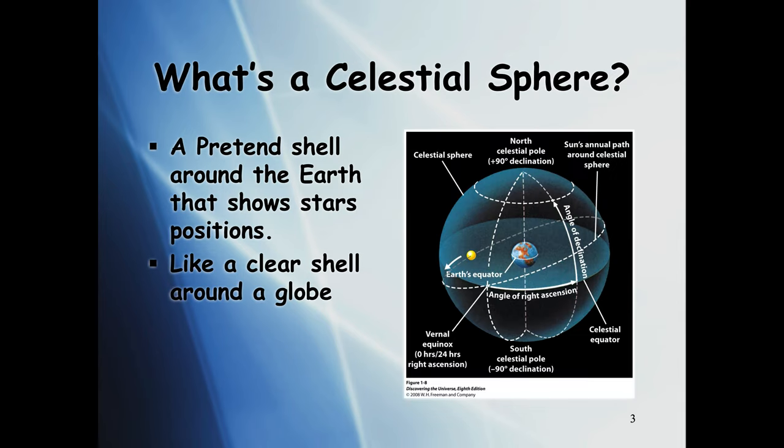So the term celestial sphere, you've heard it, I've used it, but we're going to look at it in more detail today. Basically what the celestial sphere is, is it's a pretend shell around the Earth that you could plot stars on. Looking at the picture here that I scanned in from our text, in the center there, that's Earth, and that little yellow sphere there, that's supposed to be the Sun. And then you see that kind of bluish bubble around the Earth. That's supposed to represent the celestial sphere.